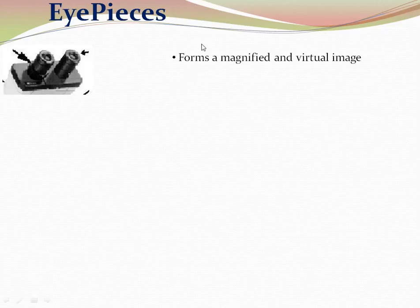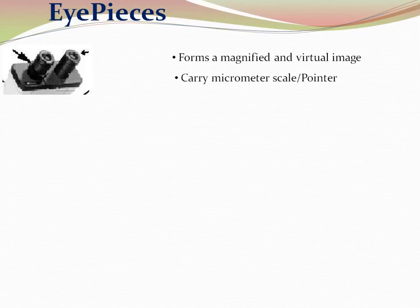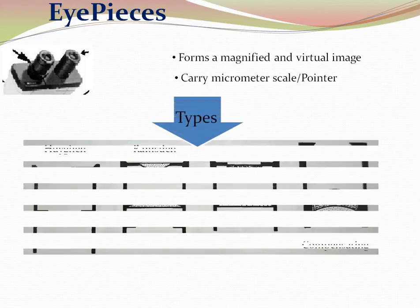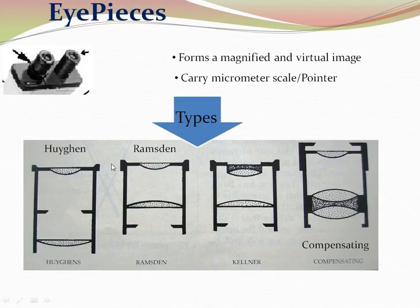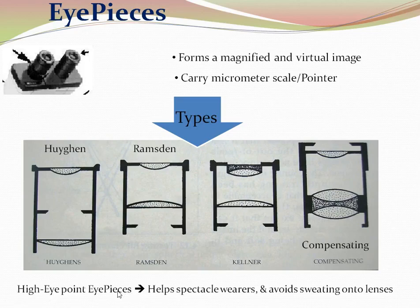The eyepiece is located at the uppermost position. Its function is to magnify and form a magnified virtual image. It sometimes carries a micrometer or pointer. There are different types of eyepiece used in the microscope. Most commonly nowadays we use a compensating eyepiece. There are also high eyepoint eyepieces that help spectacle users and avoid sweating onto the lenses.